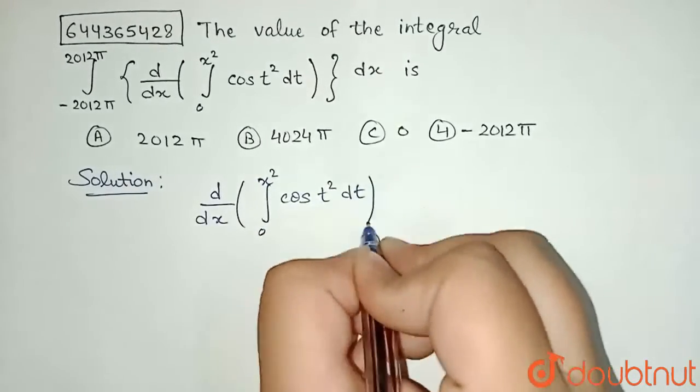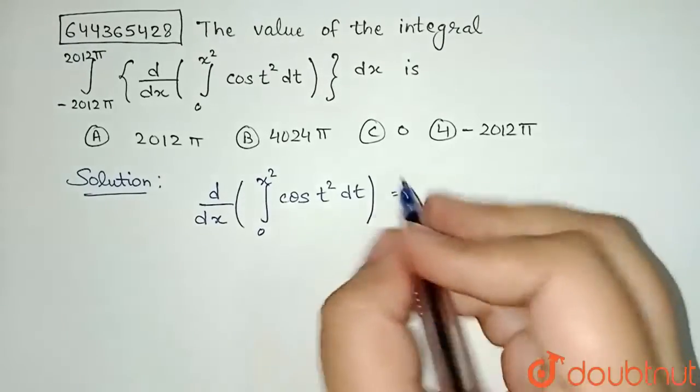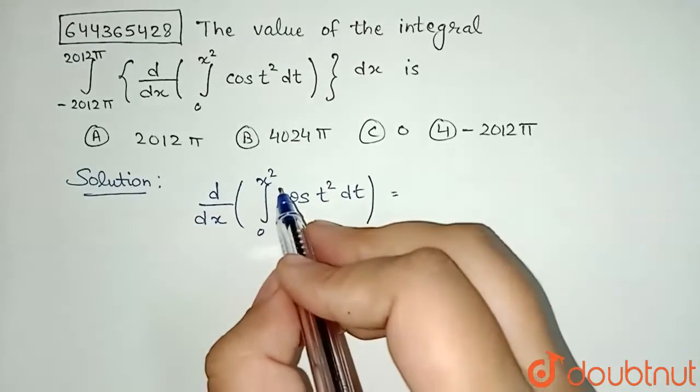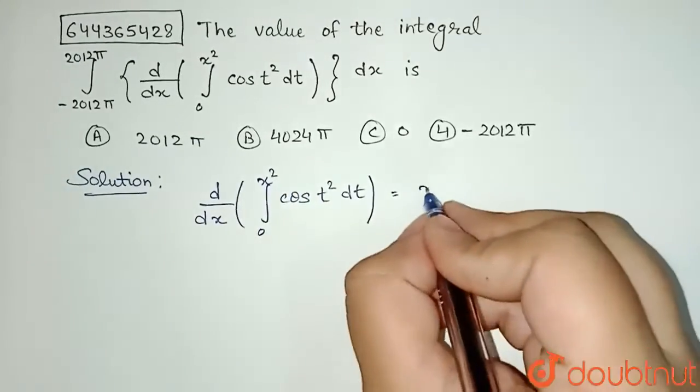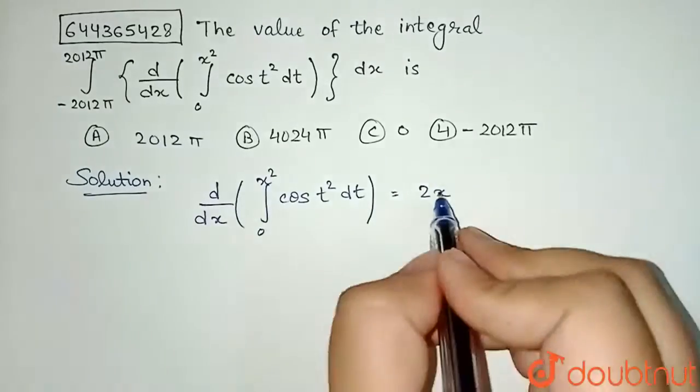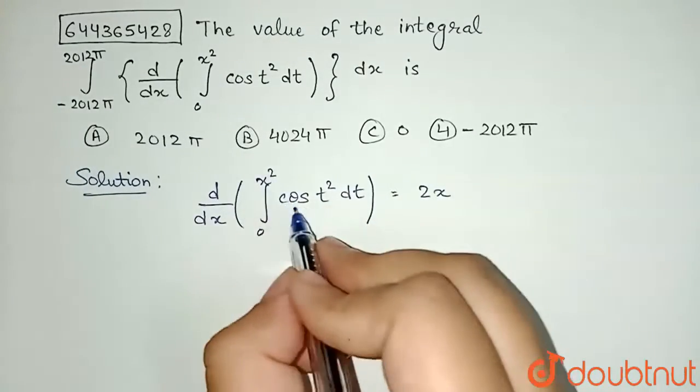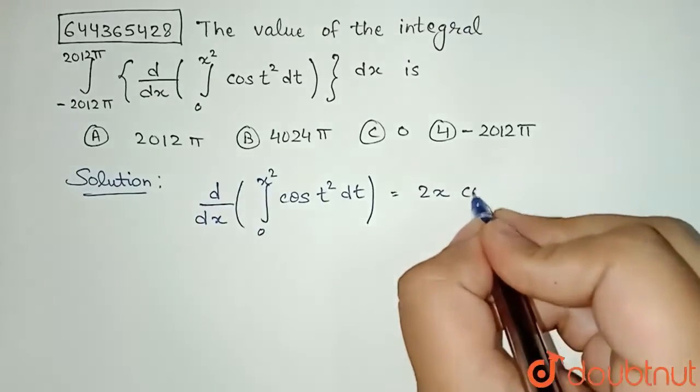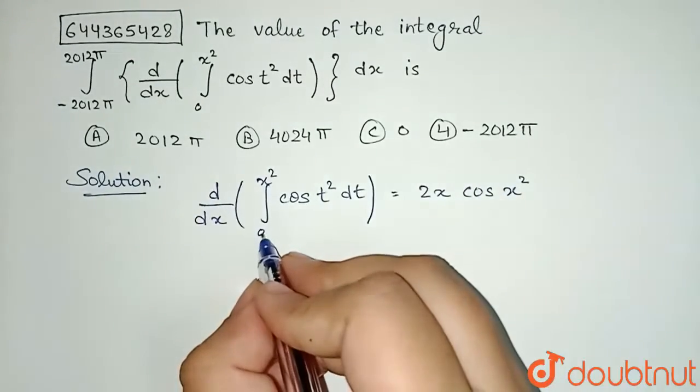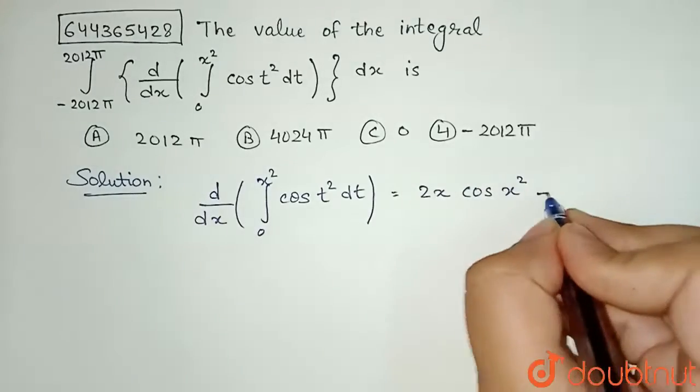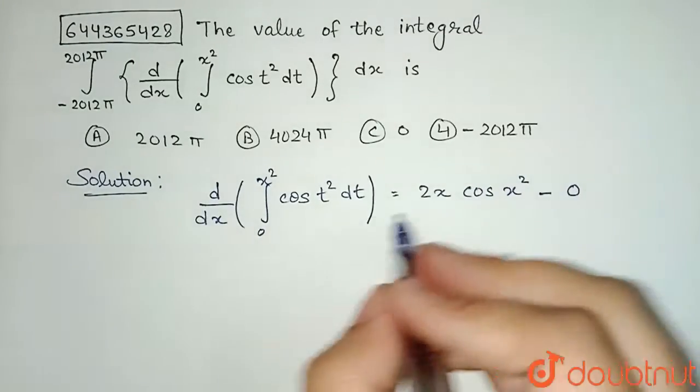When we differentiate this integral, we differentiate the upper limit. So differentiation will be 2x, and we put this upper limit in the function, so that will be cos(x²). Now we will differentiate the lower limit, it is zero, so differentiation will be zero.